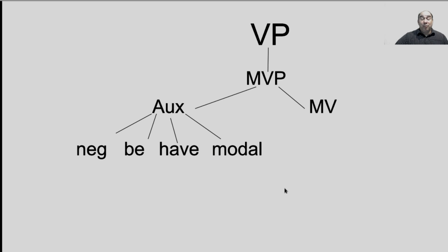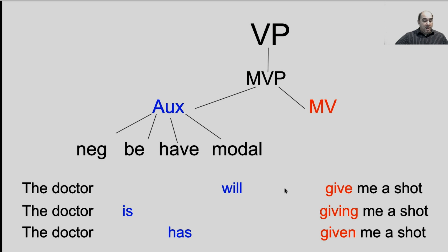Let's look at how we use this when we also have auxiliary elements. "The doctor will give me a shot" — "will" is a modal, and "give" is the main verb, so "will" is part of the auxiliary. "The doctor is giving me a shot" — "is" is part of your be verb, your helping verb, giving you be + -ing. Another option: "The doctor has given me a shot" — "has" is part of your have helping verb, giving you have + past participle (-ed or -en).